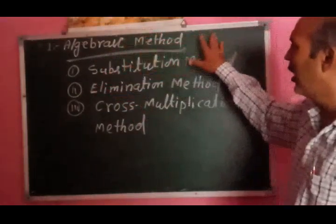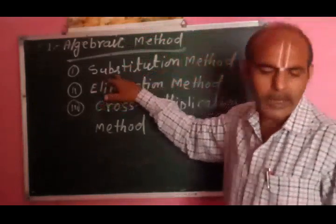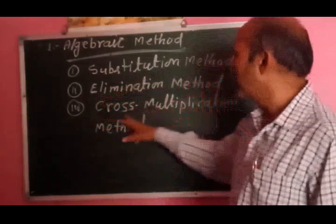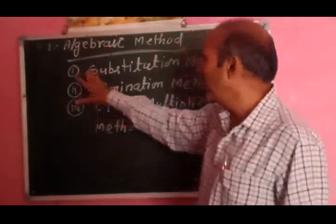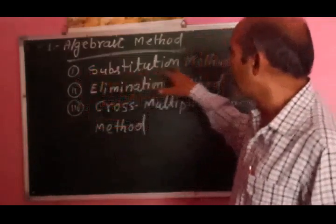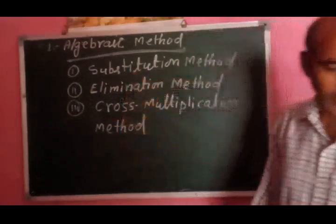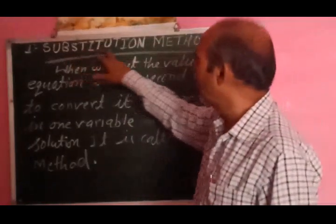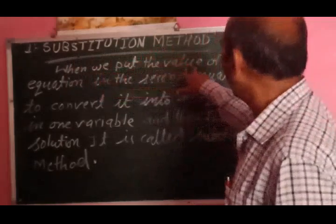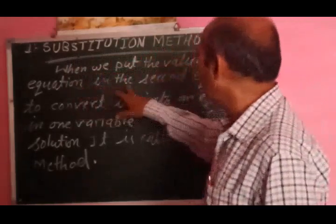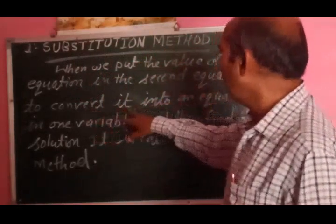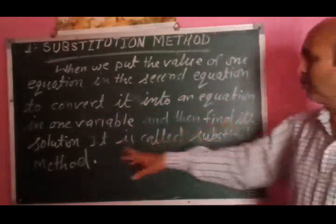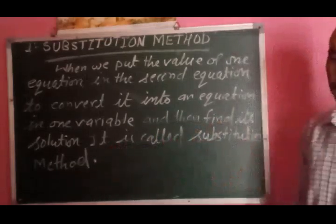Algebraic method को solve करने के तीन विधियाँ हैं: पहला substitution method, दूसरा elimination method, और तीसरा cross multiplication method. तो आज हम substitution method लेते हैं. Substitution method: when we put the value of one equation in the second equation to convert it into an equation in one variable and then find its solution, it is called substitution method.